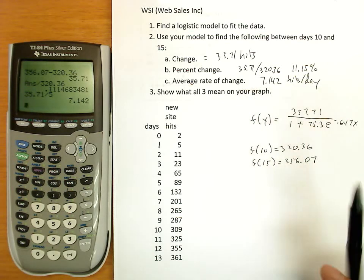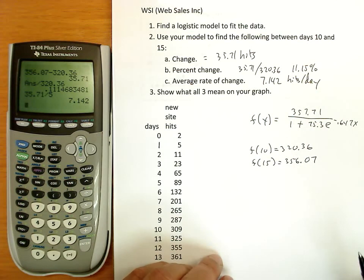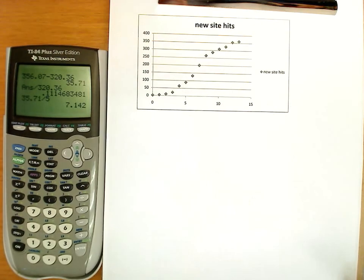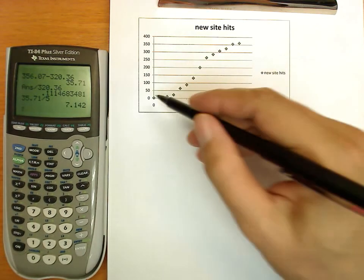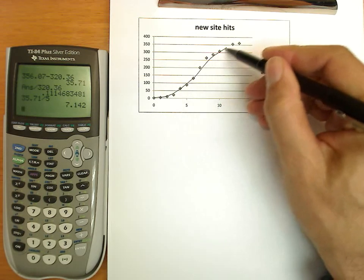Average rate of change is the slope. It says, show what all three of these mean on the graph. Okay. The next page, I have a graph. So I'm going to just freehand what the function kind of looked like.